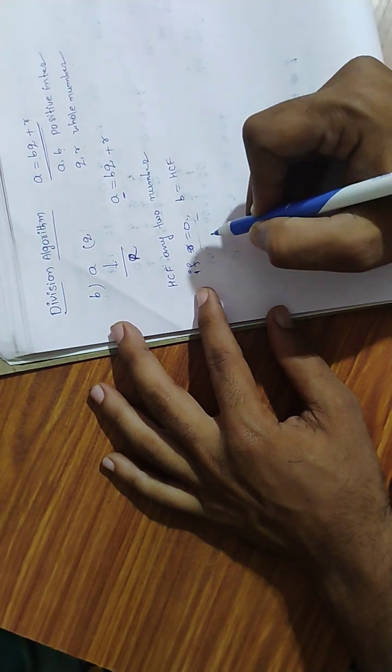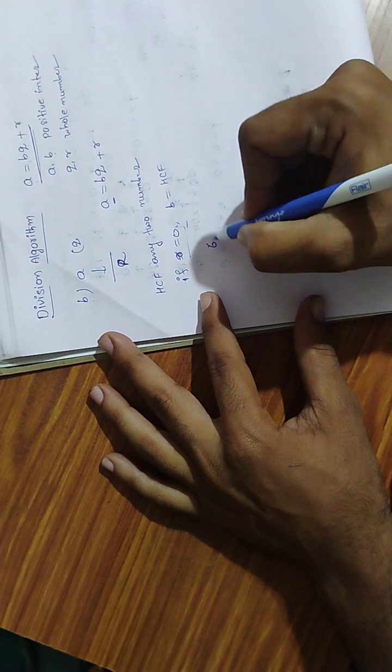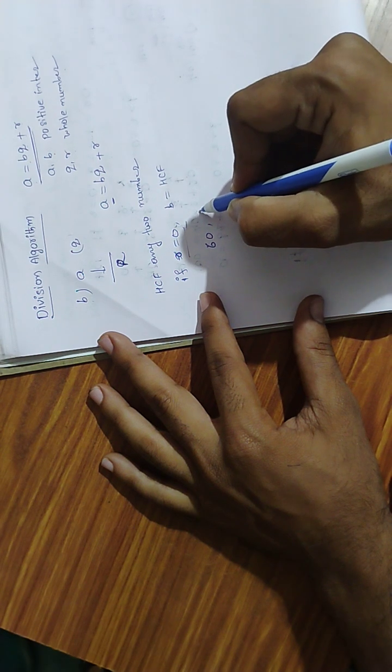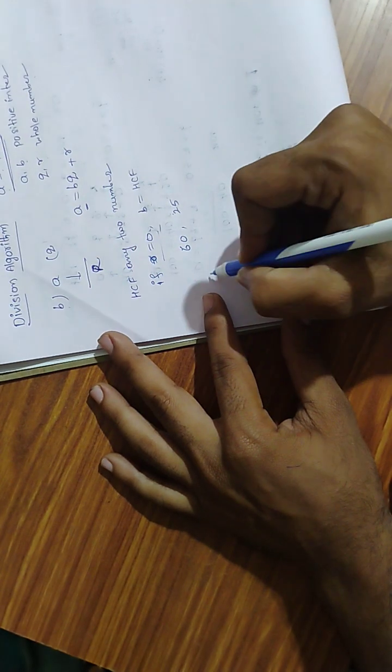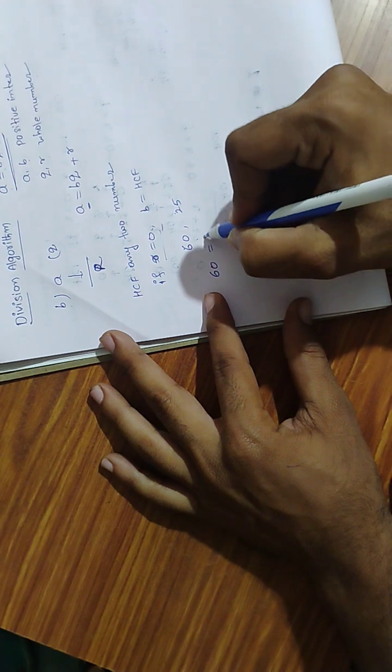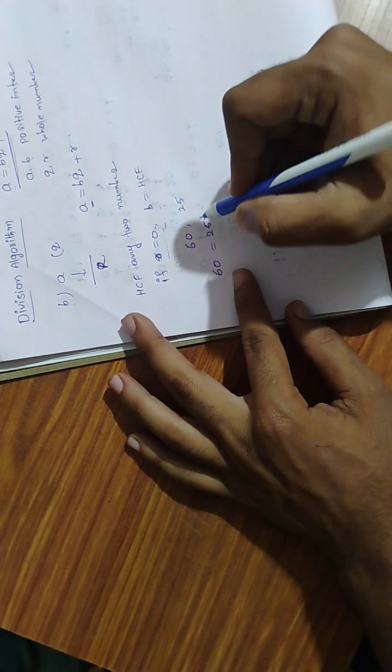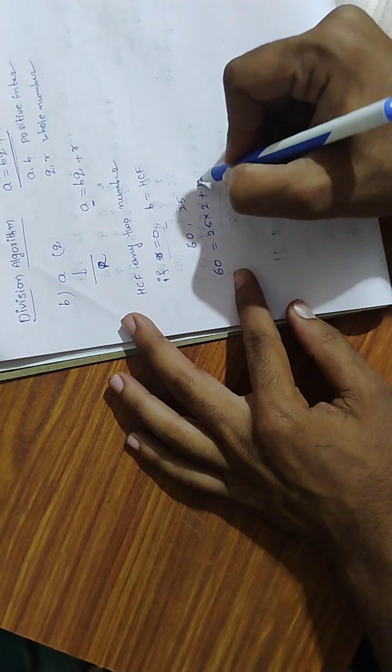For example, take 60 and 25. A is equal to 60. So 60 equals 25 into 2 plus 10. That's 50 plus the remainder, which is 10.